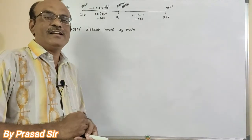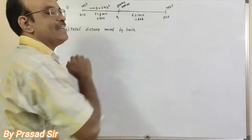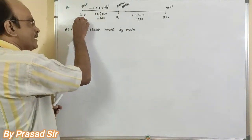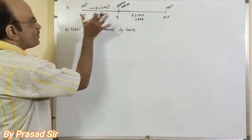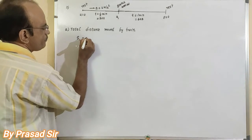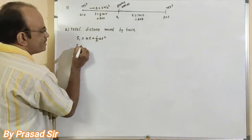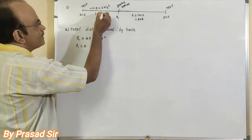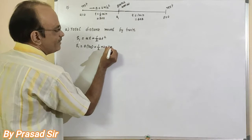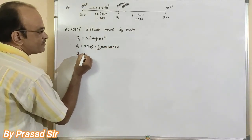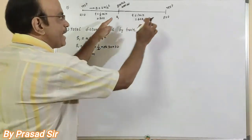Three parts are given. For part (a), total distance moved by the train means the full journey divided into two parts. The first part S1 = ut + ½at². So S1 = 0×30 + ½×2×30² = 30×30 = 900 meters.